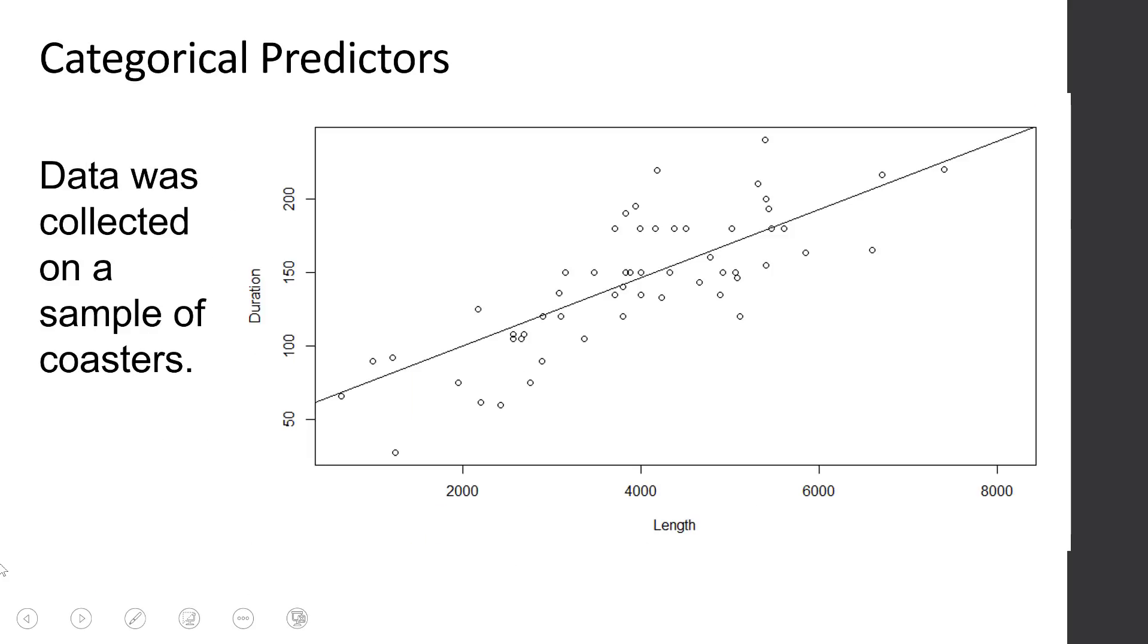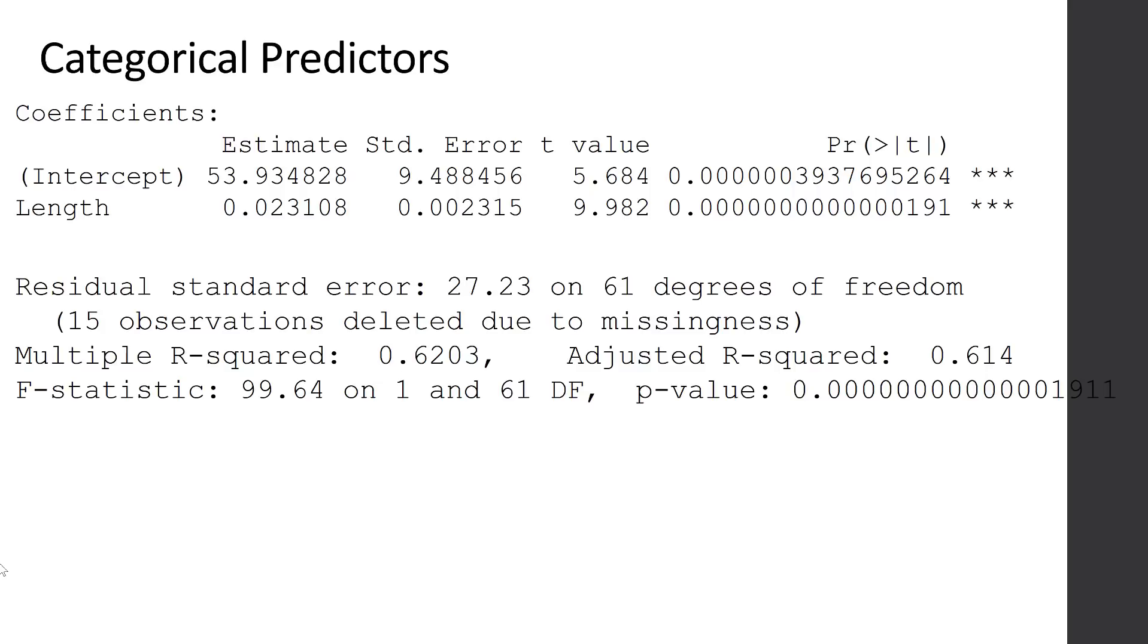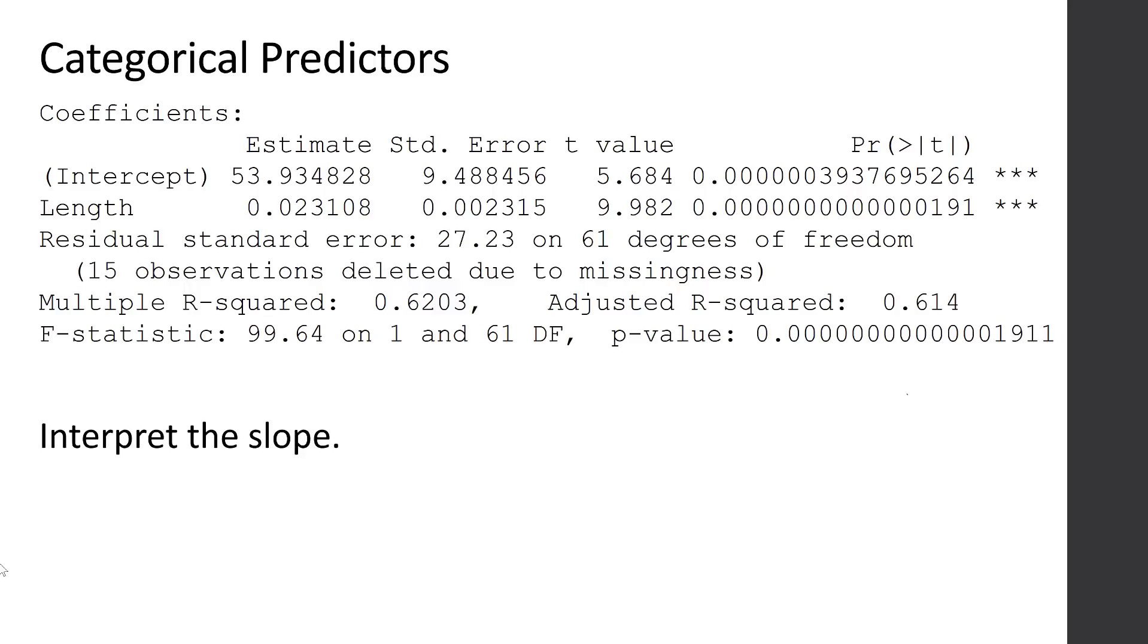We're going to take a look at this. I've created a scatter plot. It does look like there's a positive relationship between duration and length. We fit a line through it through simple linear regression, and we could look at output from our regression. I've pasted the coefficients output here along with the residual standard error and the R squared.